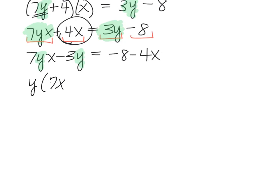And then we'll be left with 7x minus 3. And now we successfully got both of the y's on the same side, and we've factored out the y, so finally we can divide by the 7x minus 3 to isolate y.